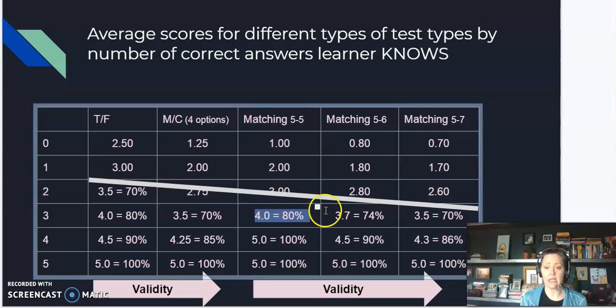So we can see that matching one-to-one is a threat to validity similar to true and false. But if there's at least one good distractor, you can see that in order to hit above the threshold of 80%, they have to know at least four out of every five. And of course it's even better to have two options.